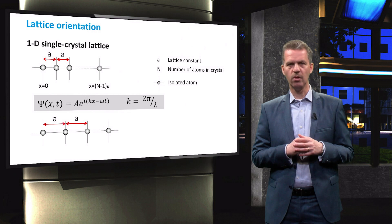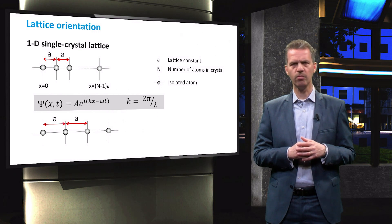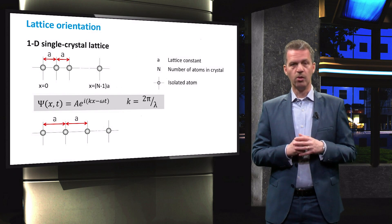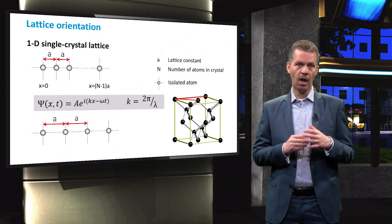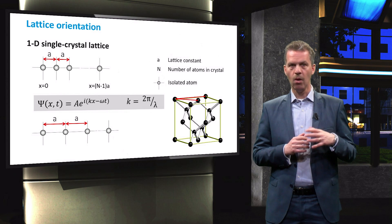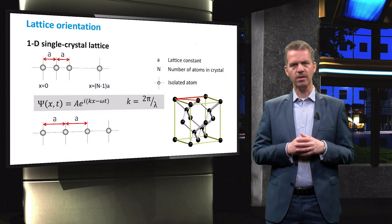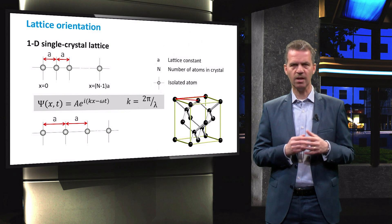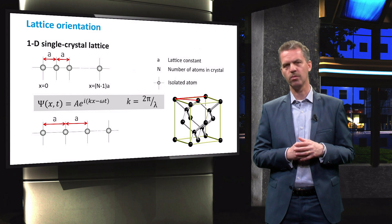Now that we have seen the solution in one dimension, you can imagine that k will also be affected by the atomic arrangement in three dimensions. The solution to the Schrödinger equation in three dimensions is beyond the scope of this course, but we can already see from the unit cell that different directions will give different atomic arrangements. As k is directly related to the energy of the plane wave, these different atomic arrangements will result in different available energy states for electrons in the lattice when considering the different orientations.